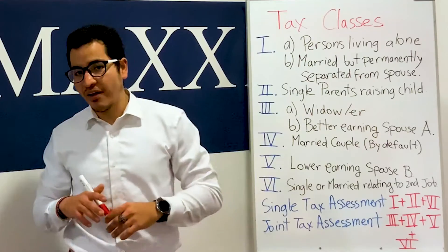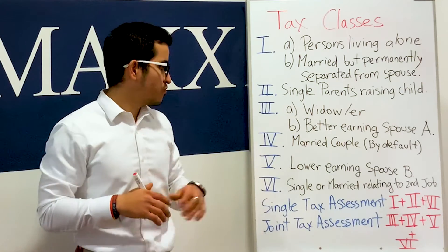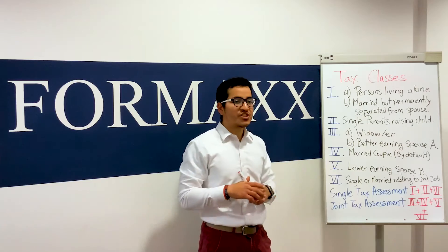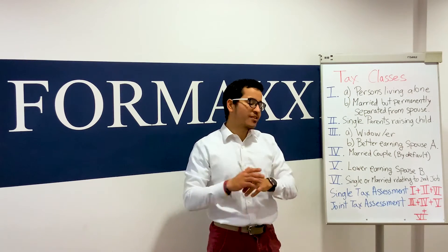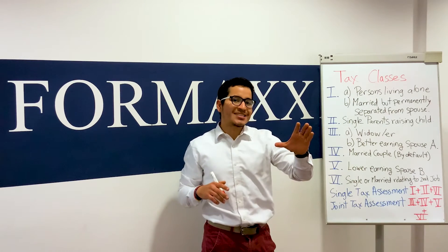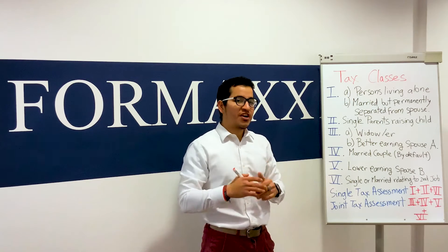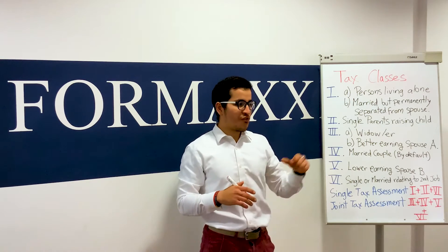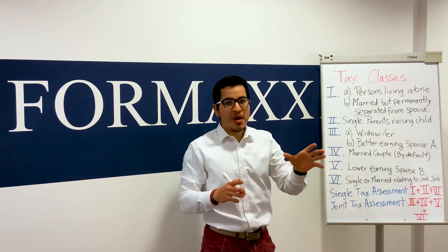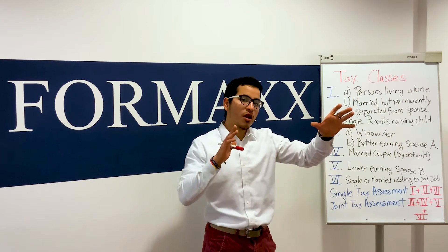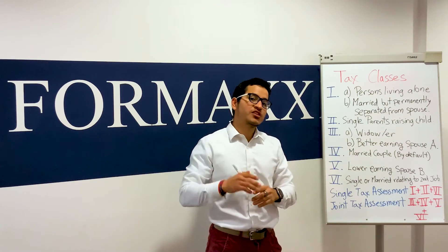Then we have number five, which is for the lower earning spouse — we call it B. And then number six: it's not really depending on your marital status, but it's actually assigned to the further job you are getting after the first one. So the first job is number one or four, depending on if you are married or single living alone, and number six is for each additional job.